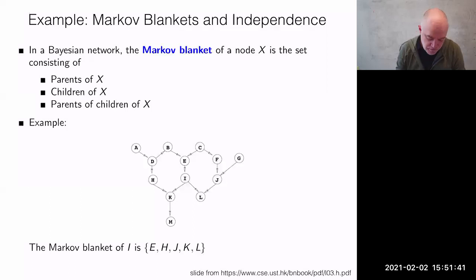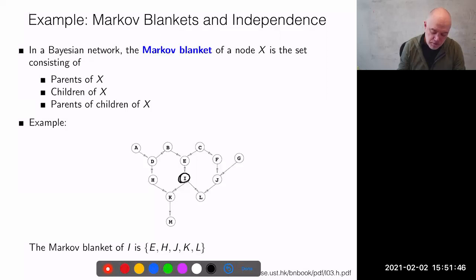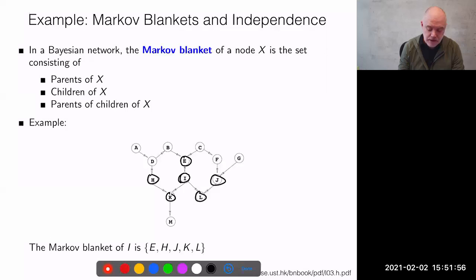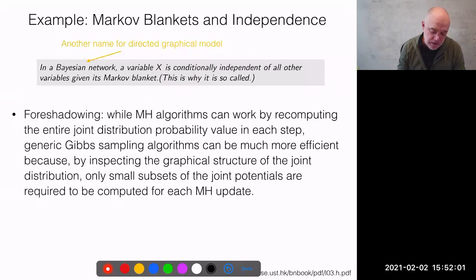In a Bayesian network, any graphical model, the Markov blanket of a node X is — by definition — the set consisting of the parents, children, and parents of children of X. So for example, in this graphical model, if we focus on node i, the Markov blanket of i consists of its parents, its children, and the parents of its children.